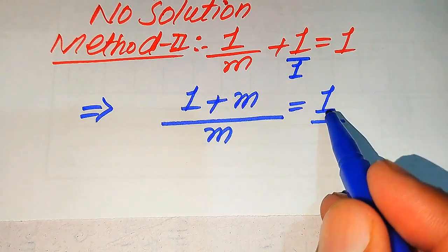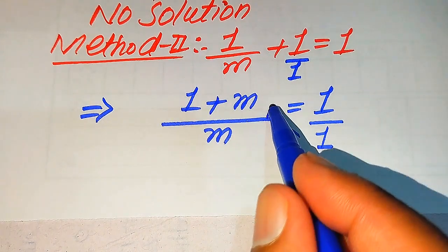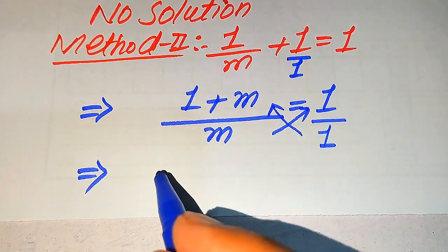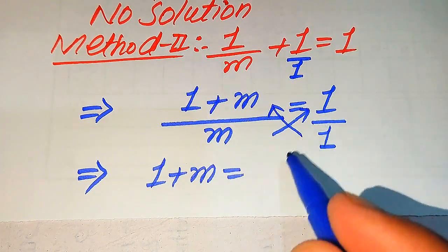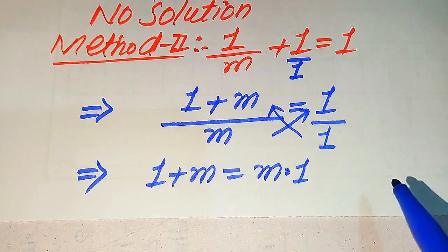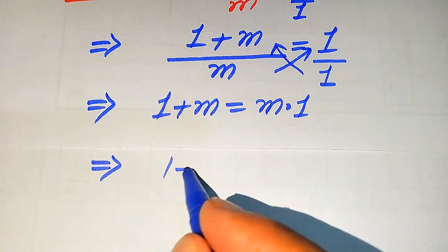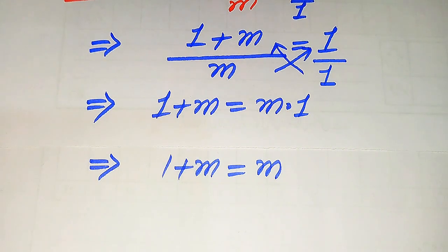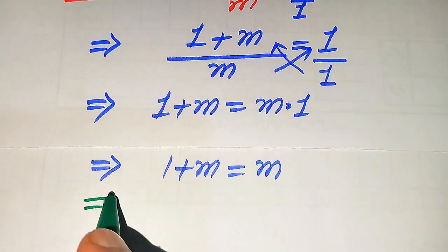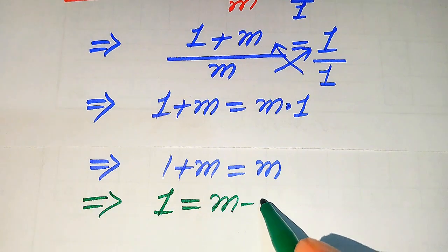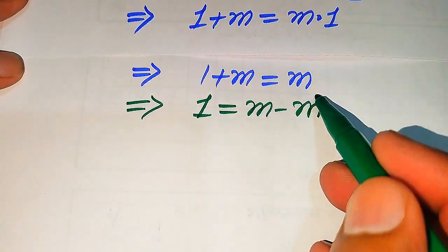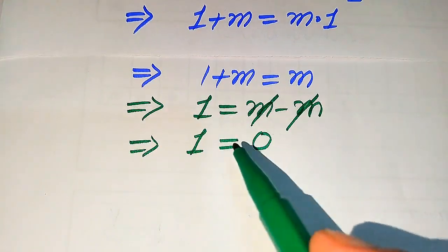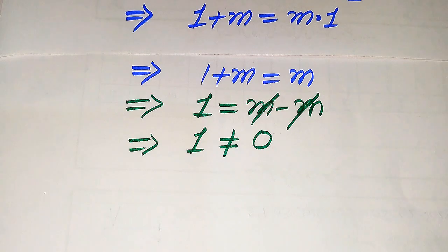Next, since the denominator on the right is 1, we cross multiply. Multiplying 1 by the left numerator and m by the right value, we get 1 plus m equals m times 1, which is m. So we have 1 plus m equals m. Moving the m on the left to the right-hand side, it becomes minus m, so positive m and minus m cancel, giving 1 equals 0.